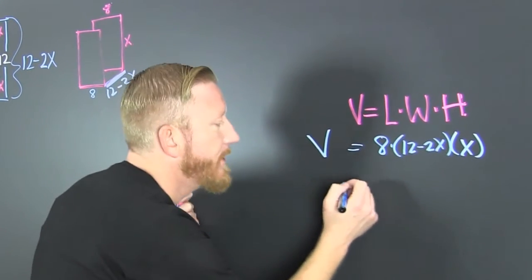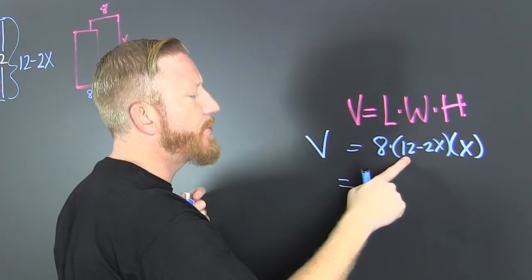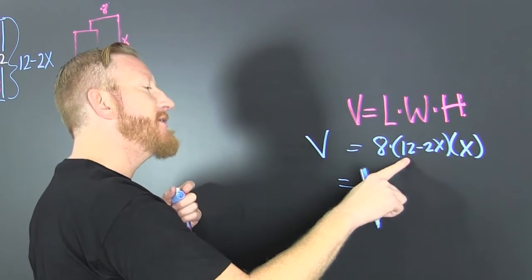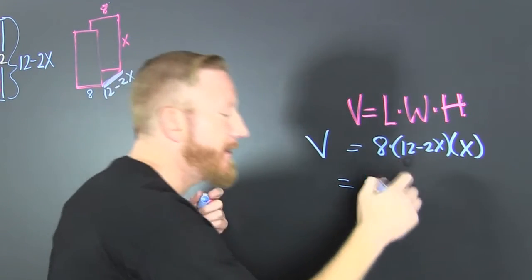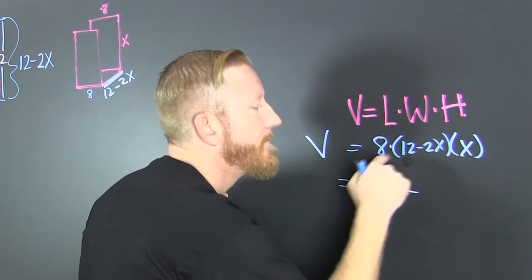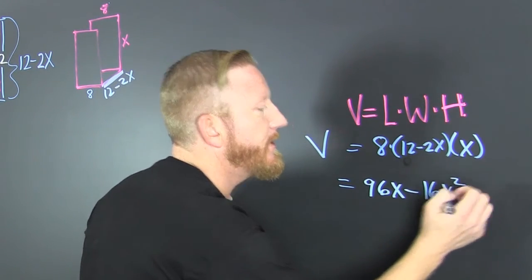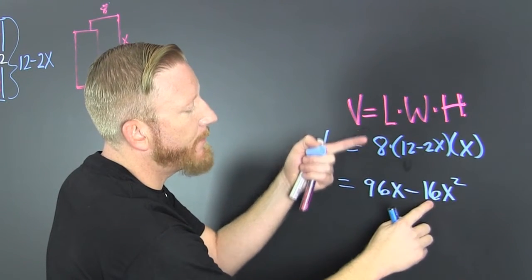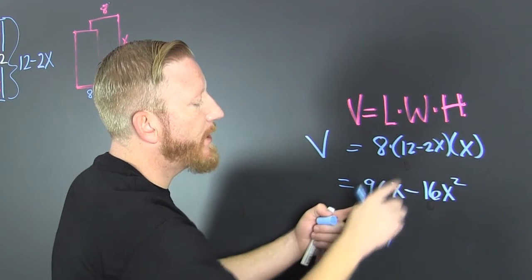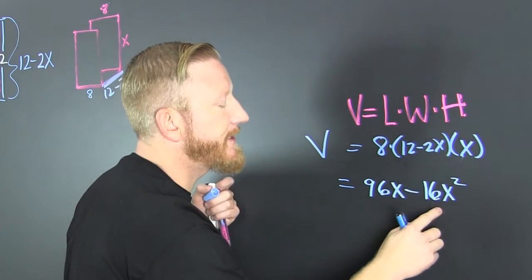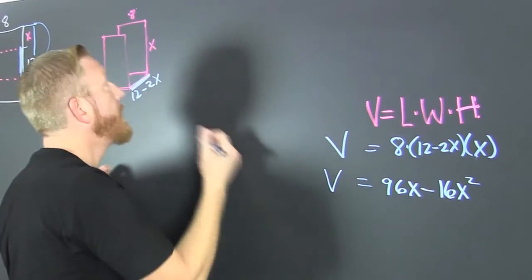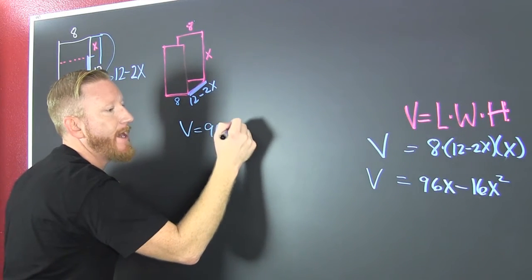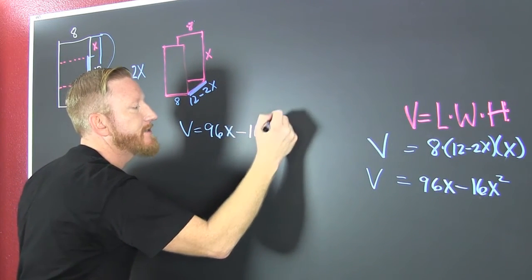Let's go ahead and get it in a nice form. So then 8 times 12, that's big. I think it's 96. Minus 16X squared. There's where I got my 96, and that's where I got my 16. And then that's where I got that X, and that's where I got that X squared. So that's our volume. Our volume is 96X minus 16X squared.